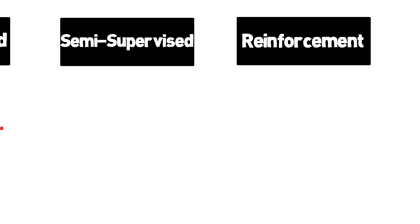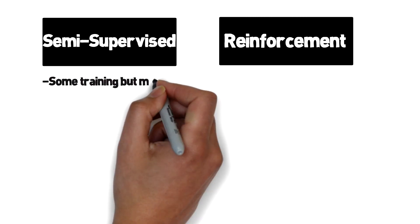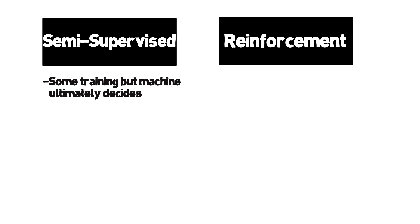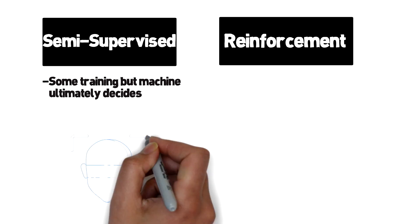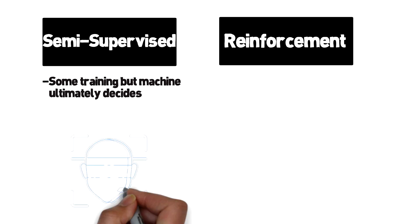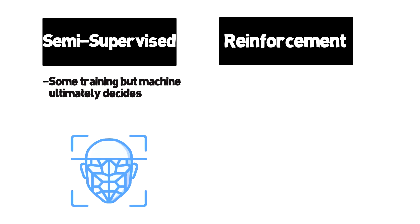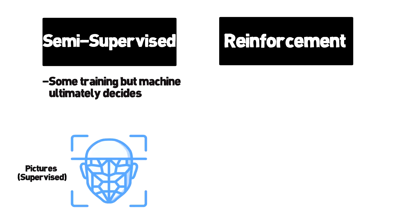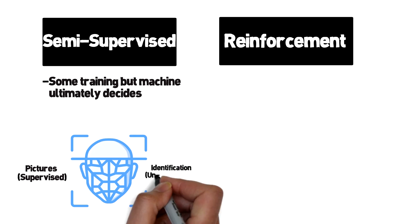Semi-supervised is a combination of these two learning approaches, because you're giving the machine some data to work from, but ultimately it has to make its own decisions. A good example of this is facial recognition on video, where the machine needs a known picture, which is supervised, to match a face to a video — unsupervised.